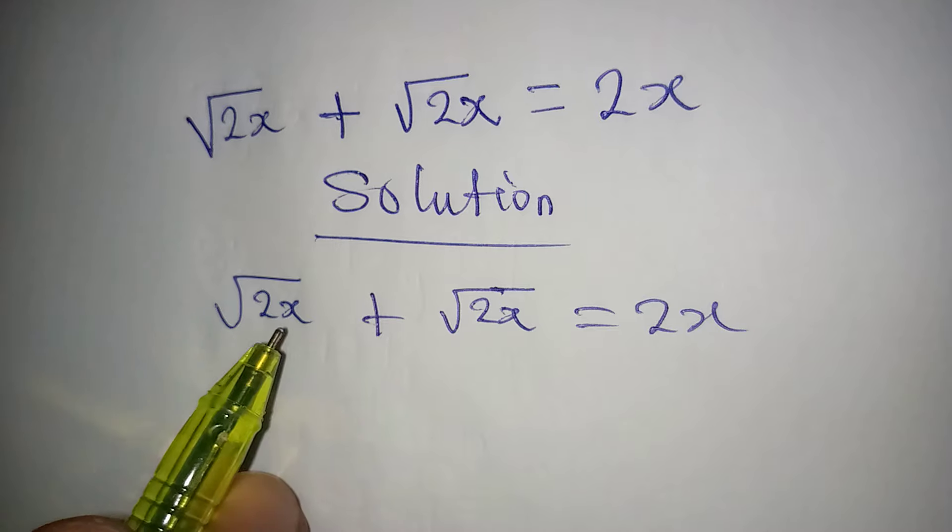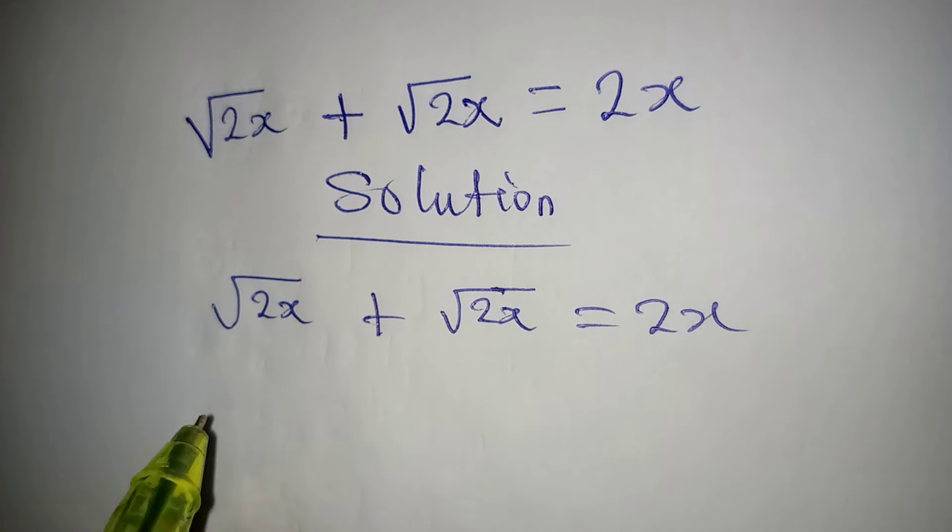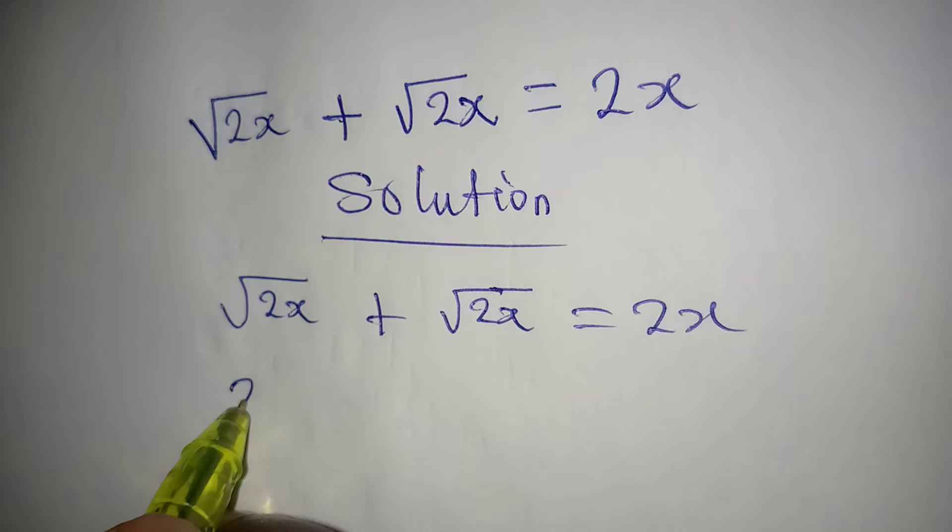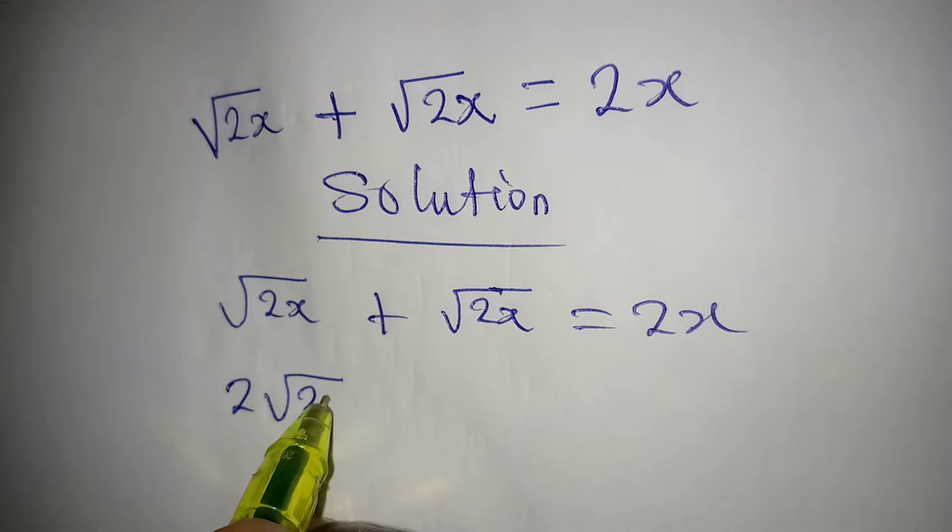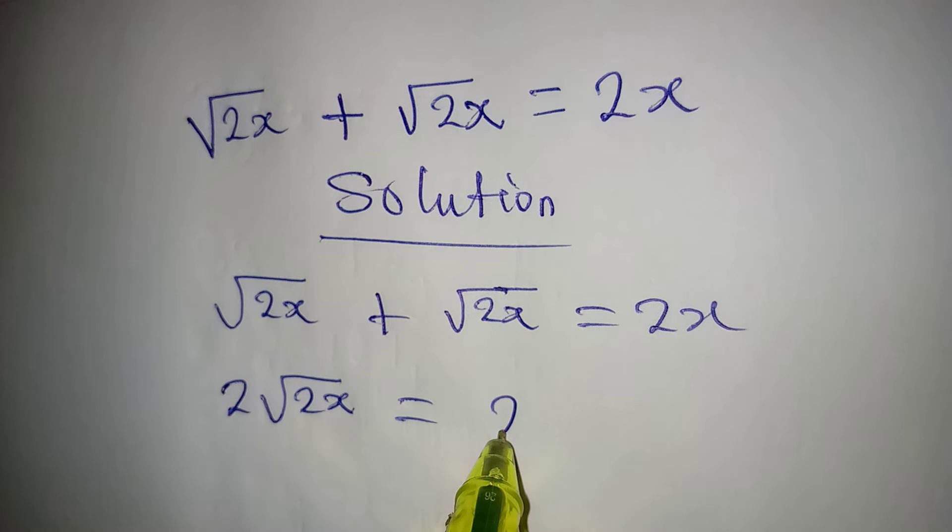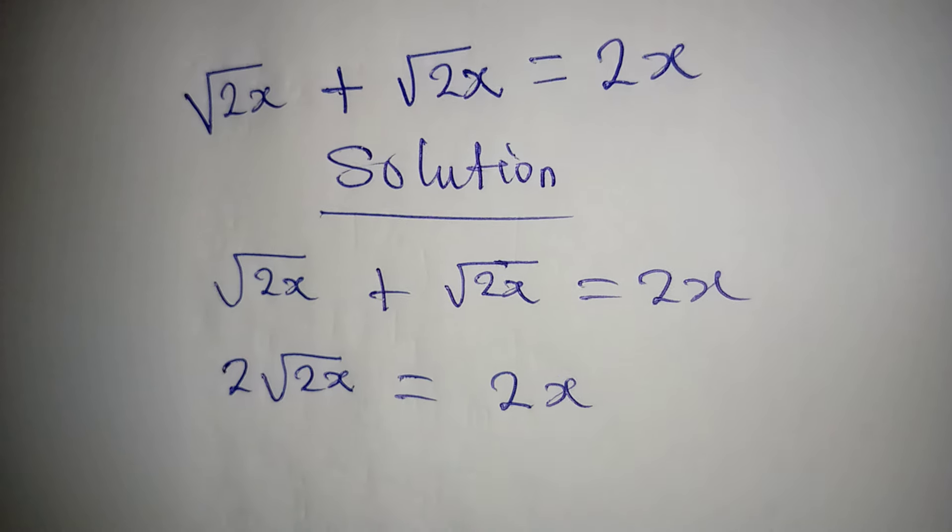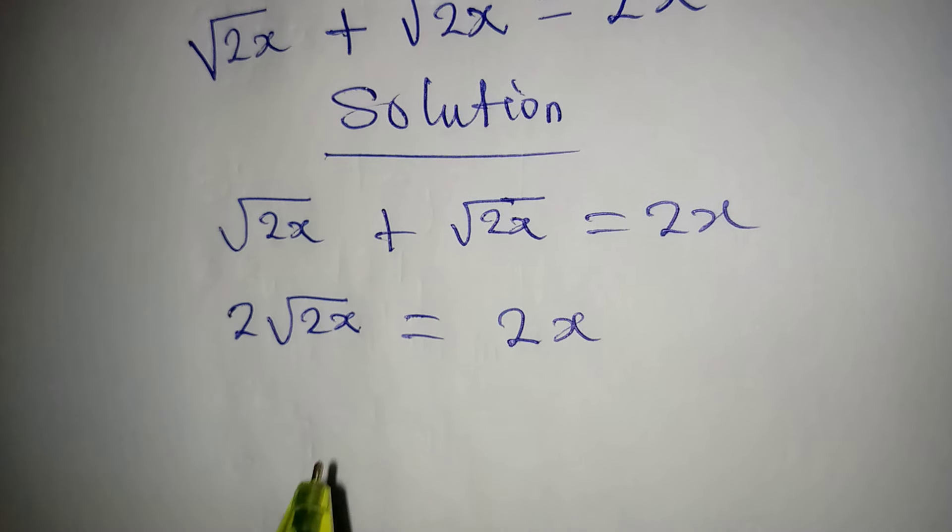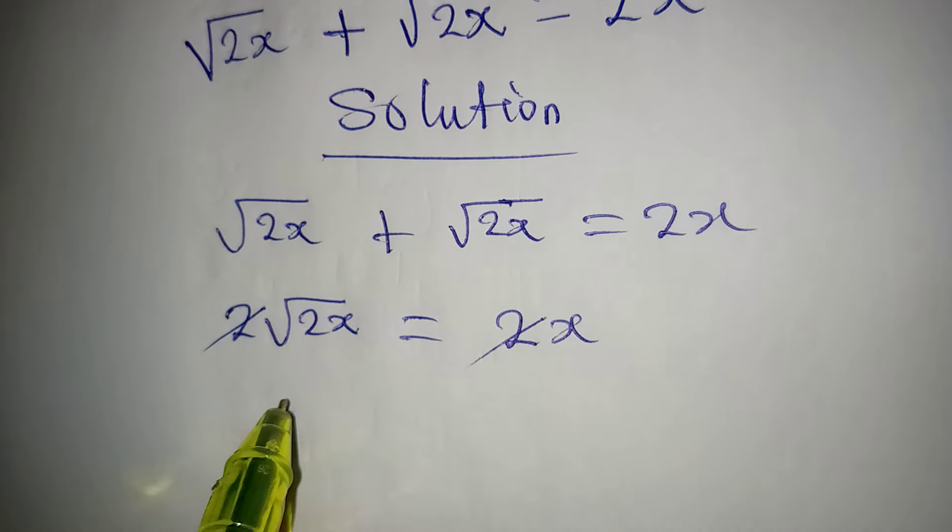We have square root of 2x in two places. This means we have 2 square root of 2x equal to 2x. What do we do from here? Let's cancel out the 2, and we have square root of 2x equal to x.